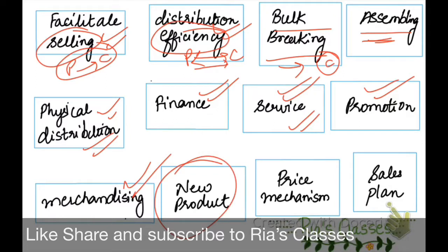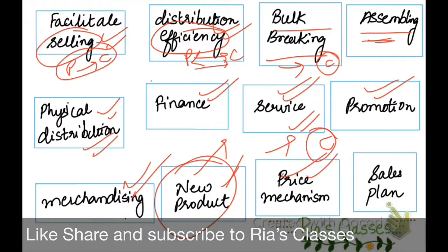If there are new or latest products, the distribution channel also helps introduce them to the market. Next is the Price Mechanism. The channel handles pricing decisions, price negotiation with the ultimate customer, and all related pricing activities for the distribution channel.